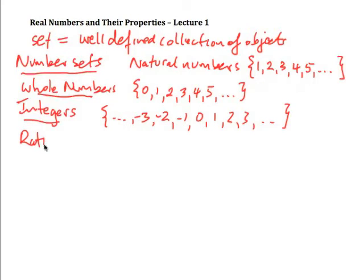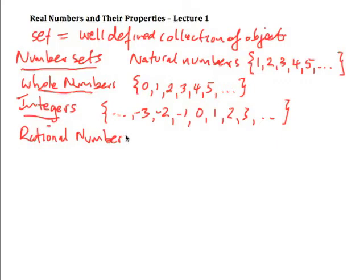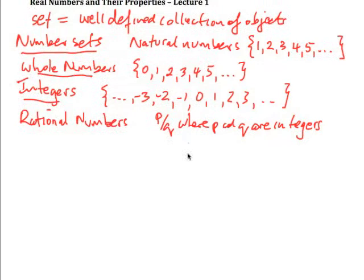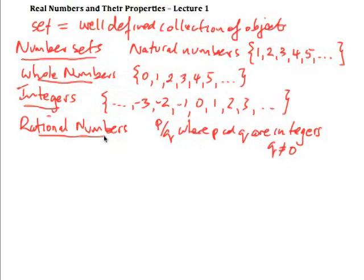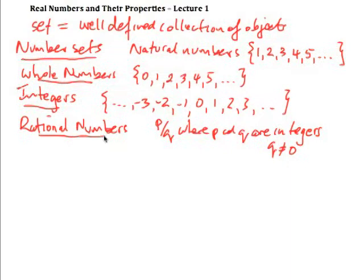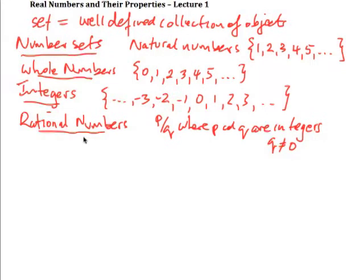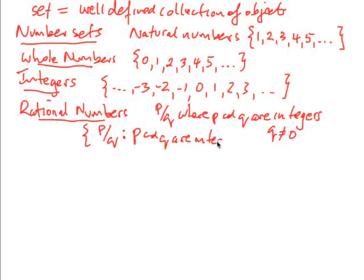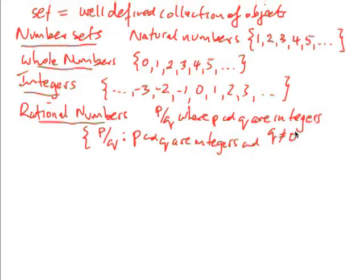Then we have rational numbers. The way we define rational numbers is: any number which can be written in the form P over Q, where P and Q are integers, and Q cannot be equal to zero because we can't divide by zero. These are the kinds of fractions. In set notation, it's the set of P over Q such that P and Q are integers and Q is not equal to zero.